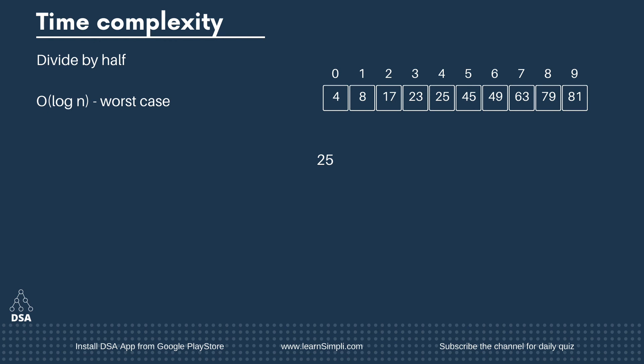What would be the time complexity in the best case? Say for example you are searching for data 25 in the array. To find it we first divide the array by finding the middle value. The left variable is 0 and the right variable is 9. So 0 plus 9 divided by 2 is 4.5, and the floor value is 4 — so the middle value is index 4, and data is 25.